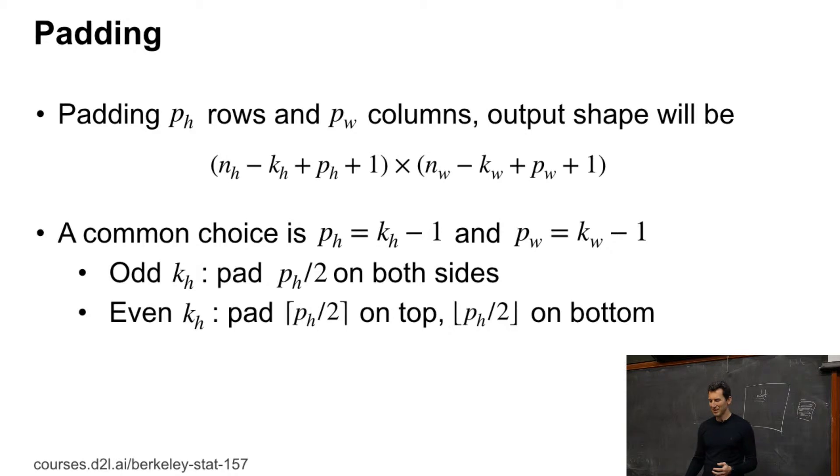And this will start to matter as we go and combine different convolutions of the same image together. For instance, there's this architecture called Inception, and for that this is vital because otherwise you won't be able to pad things together. It just doesn't make any sense in terms of dimensionality.